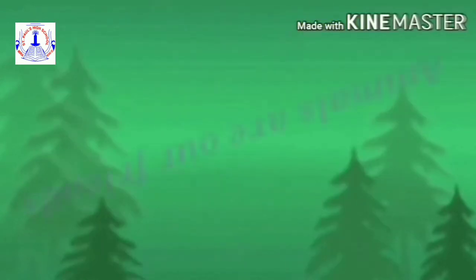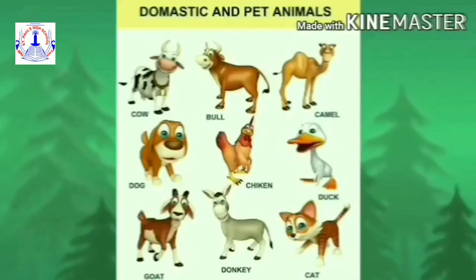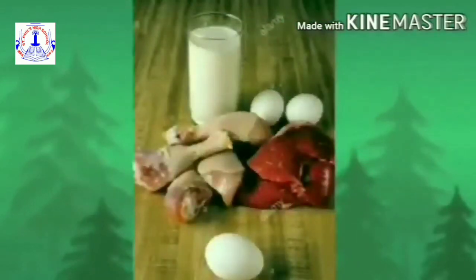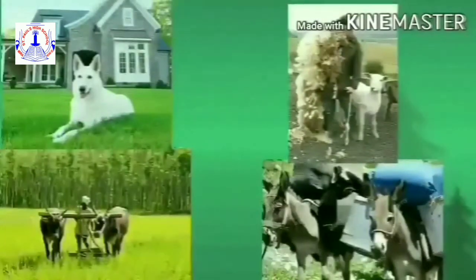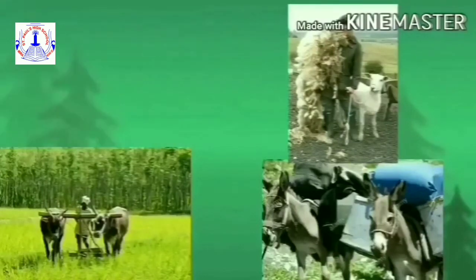We also keep some animals to satisfy our needs. They become dear to us. We look after them, feed them, take care of them, and take them to the vet if they fall ill. A vet is a doctor for animals. These animals do return affection by giving us different things. We get milk, meat, eggs and several other things from animals. Some animals are used for carrying burdens or drawing carts. Domestic animals are also used to help with heavy farm work in fields. Dogs guard a house and sheep give us wool.